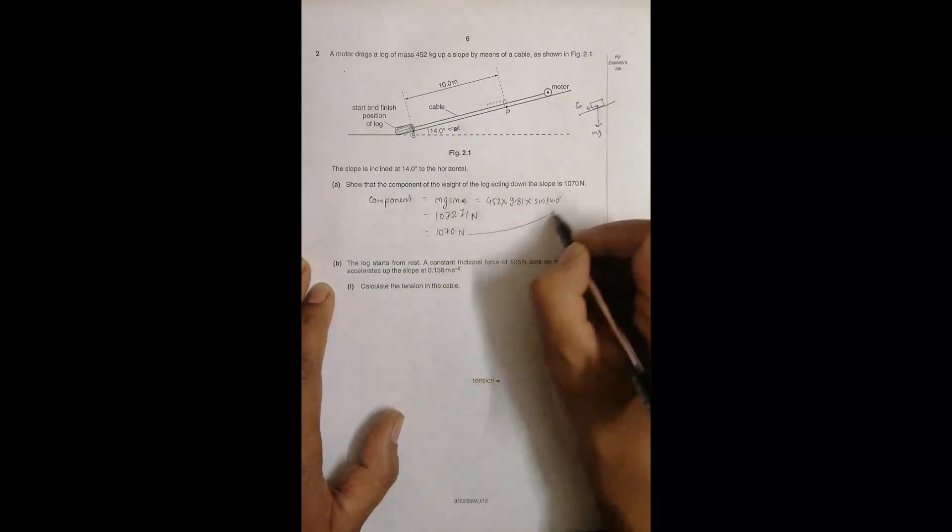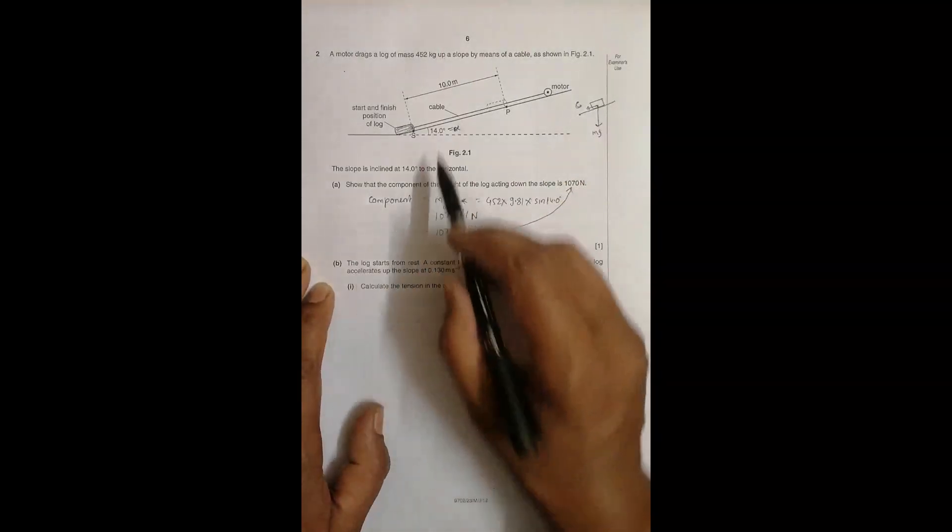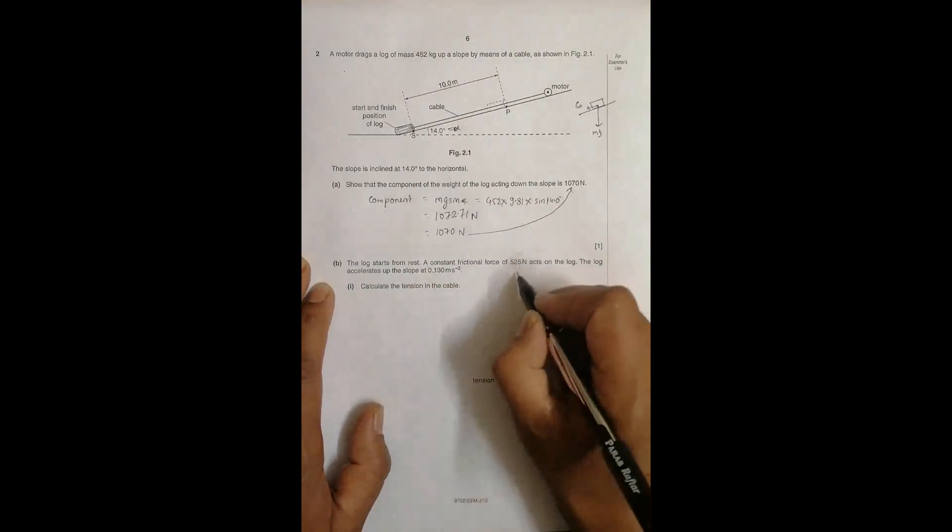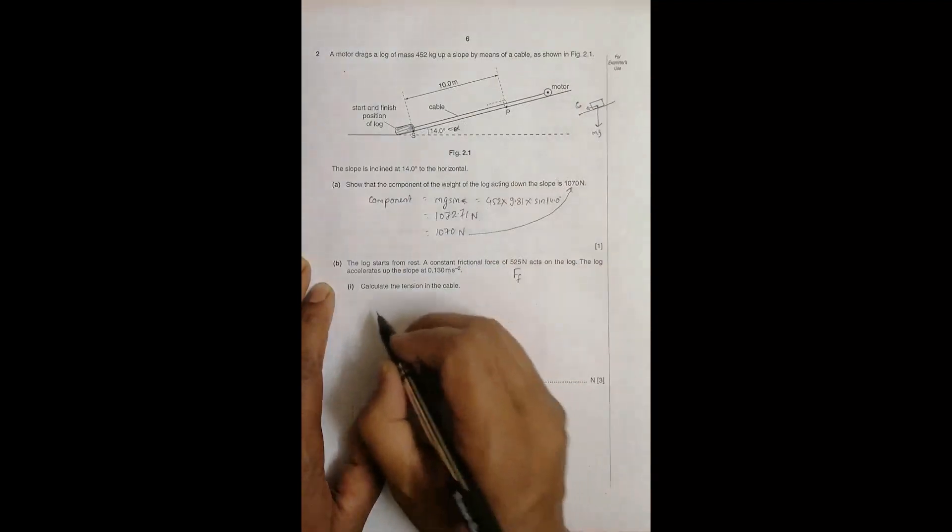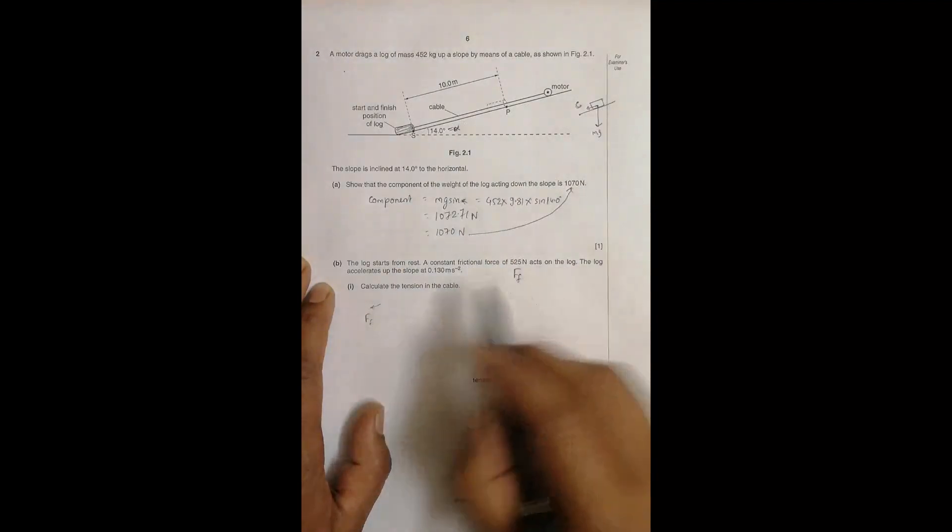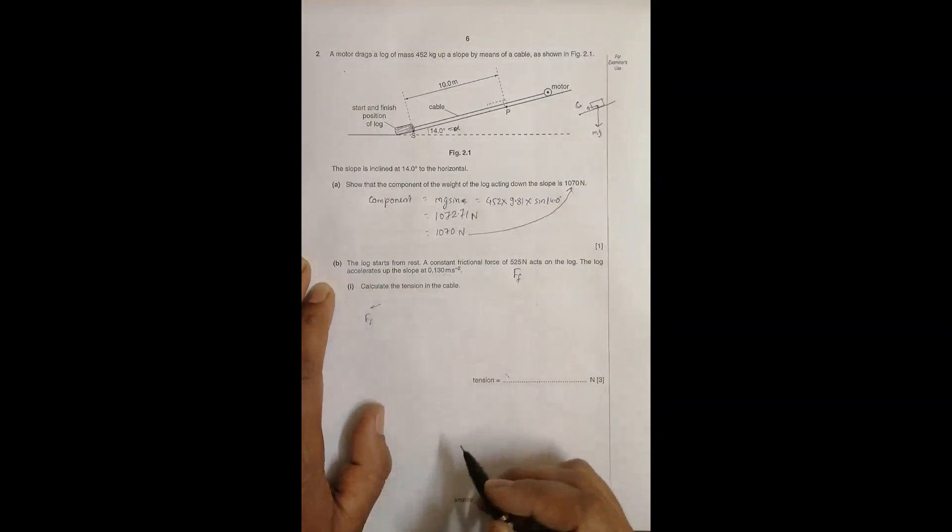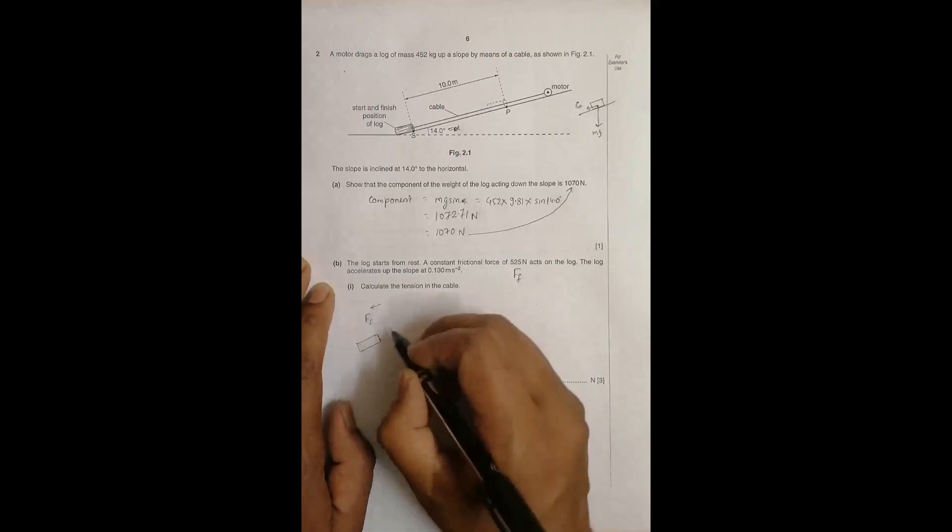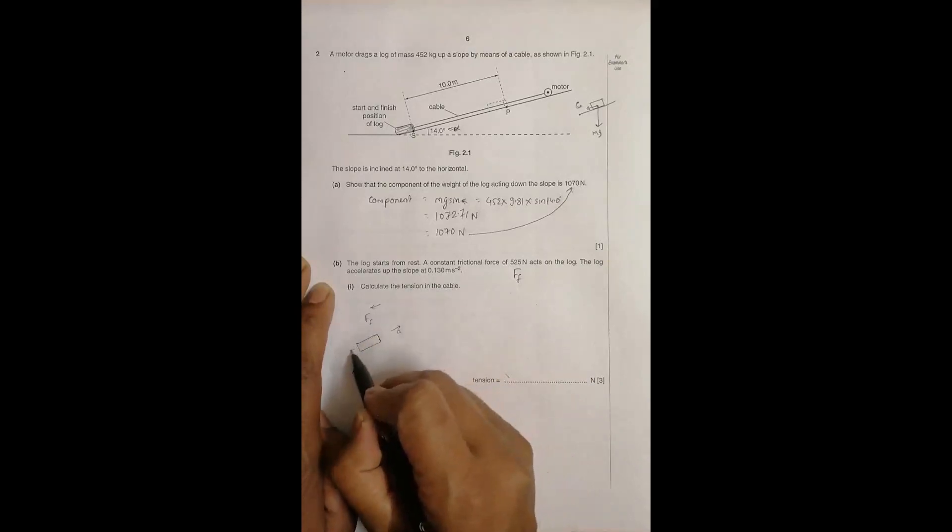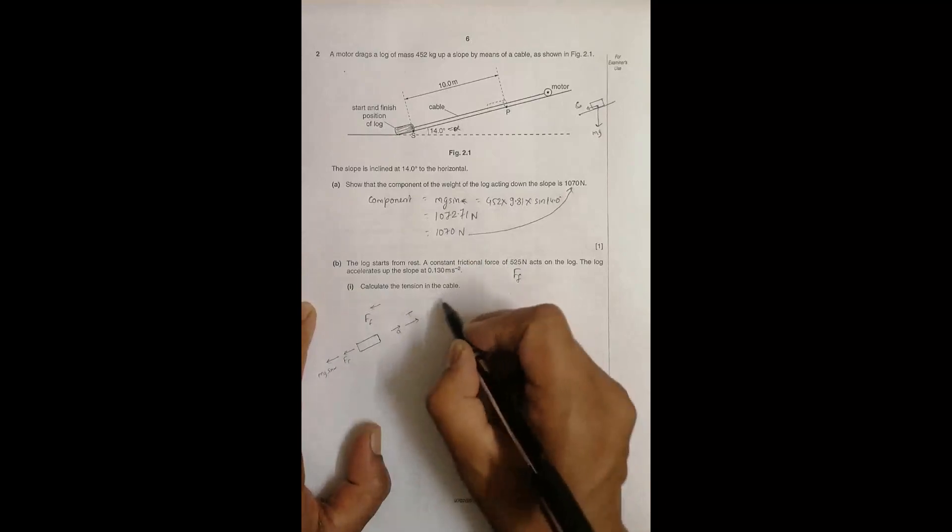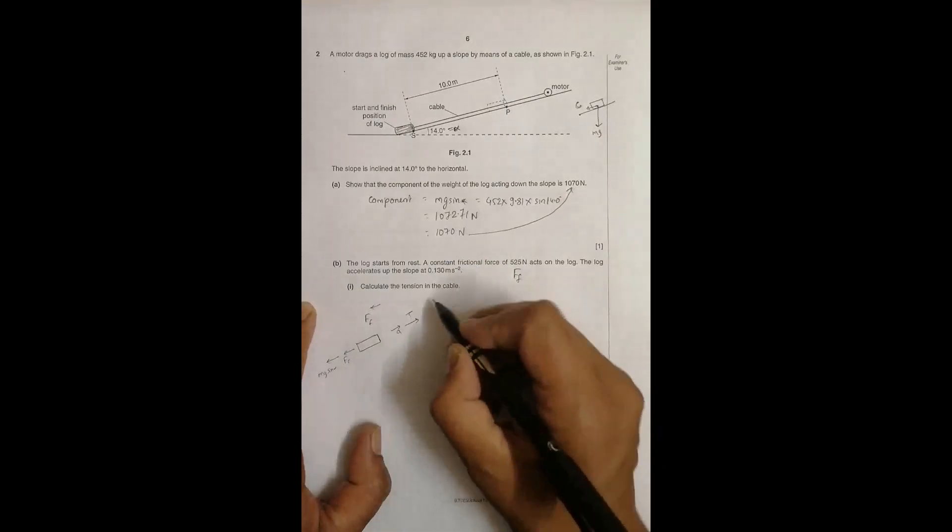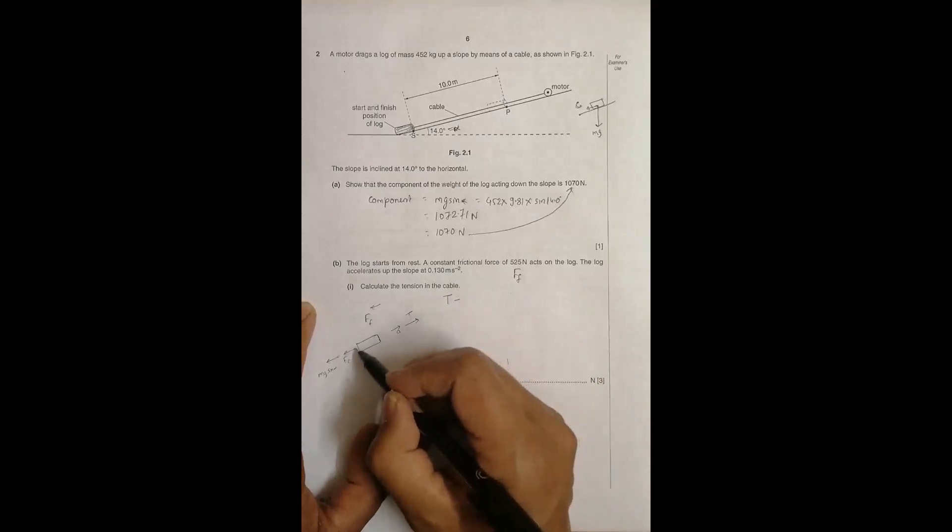The log starts from rest. A constant frictional force FF acts on the log. The log accelerates up the slope at 0.130 meters per second squared. Drawing the diagram: acceleration is in this direction, frictional force FF in the downward direction, the component mg sine alpha also downward. The tension of the cable T is in the upward direction.